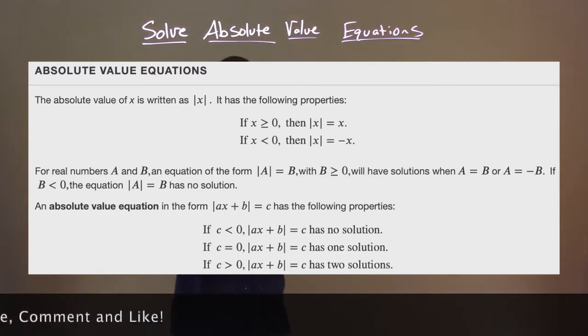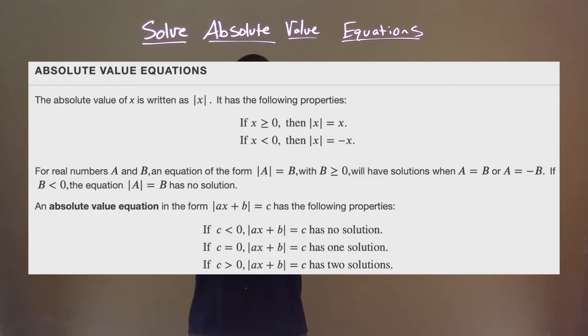For real numbers A and B, an equation of the form absolute value of A equals B with B greater than or equal to zero will have solutions when A equals B or A equals negative B. If B is less than zero...